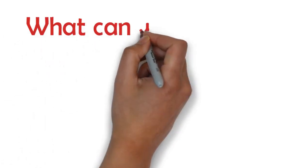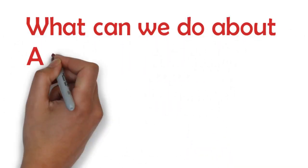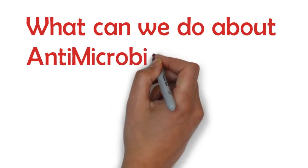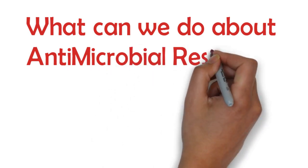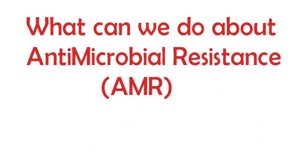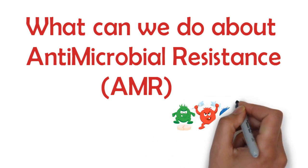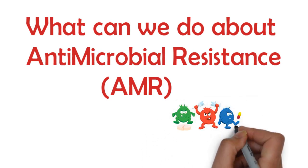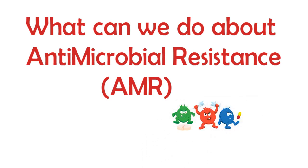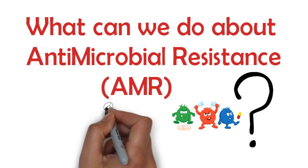In this module so far, we have looked at the global problem of antimicrobial resistance, discussed the extent to which antimicrobial use in animals is likely to contribute, and outlined the context of antimicrobial resistance in humans and animals in Australia. But the question remains, what can we do about antimicrobial resistance?